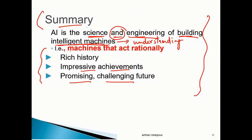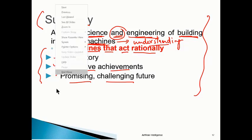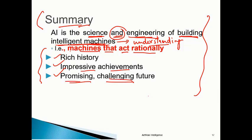In summary, AI is the science and engineering of building intelligent machines — machines that can understand humans, act rationally, and think with reason. There is a rich history and impressive achievements so far, with a great and promising future. It is a challenging but important area of work.